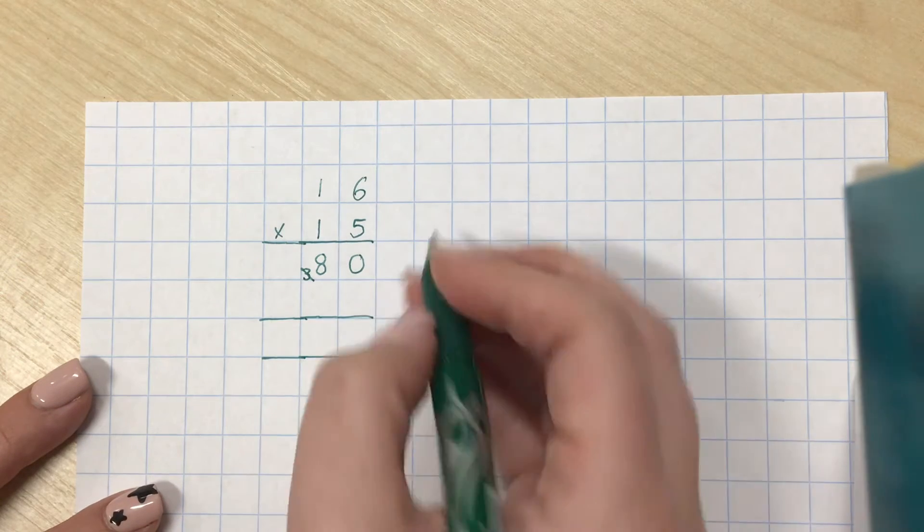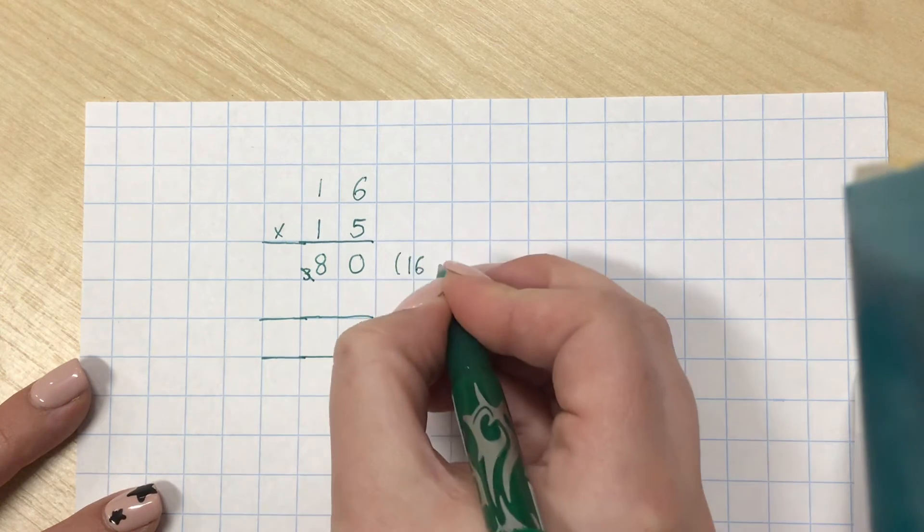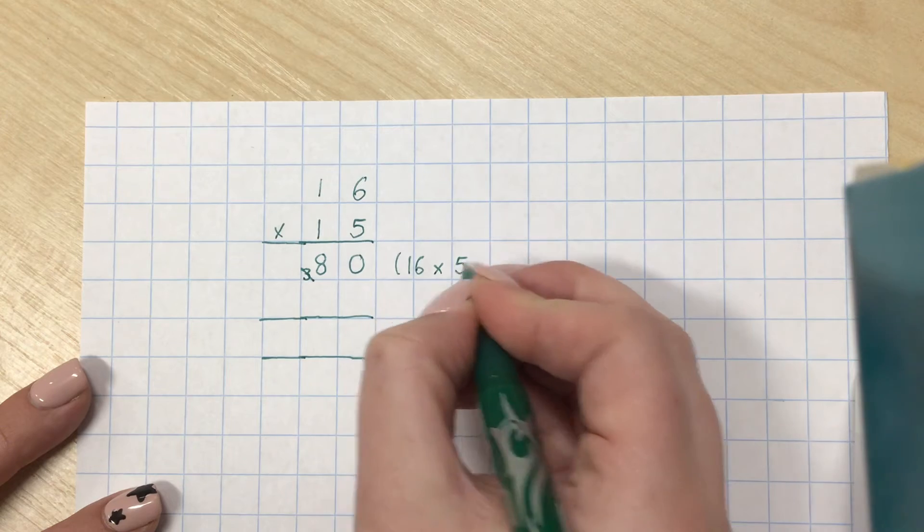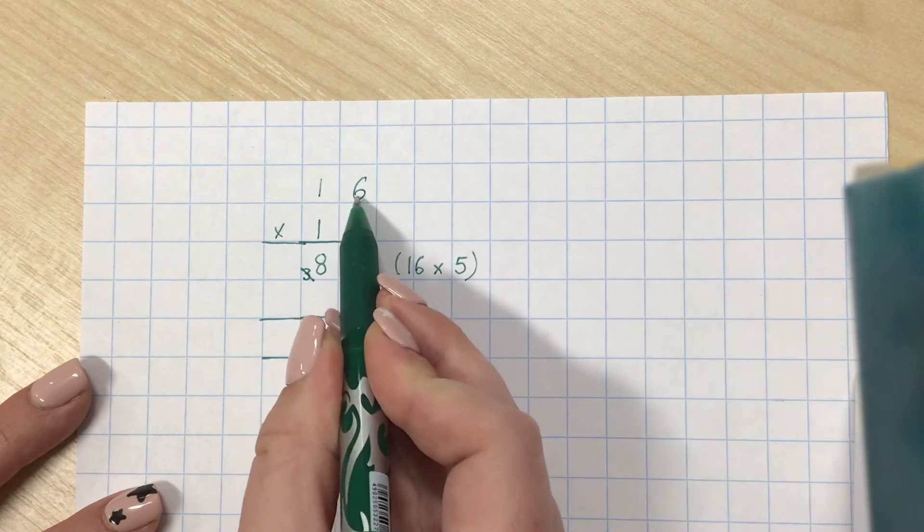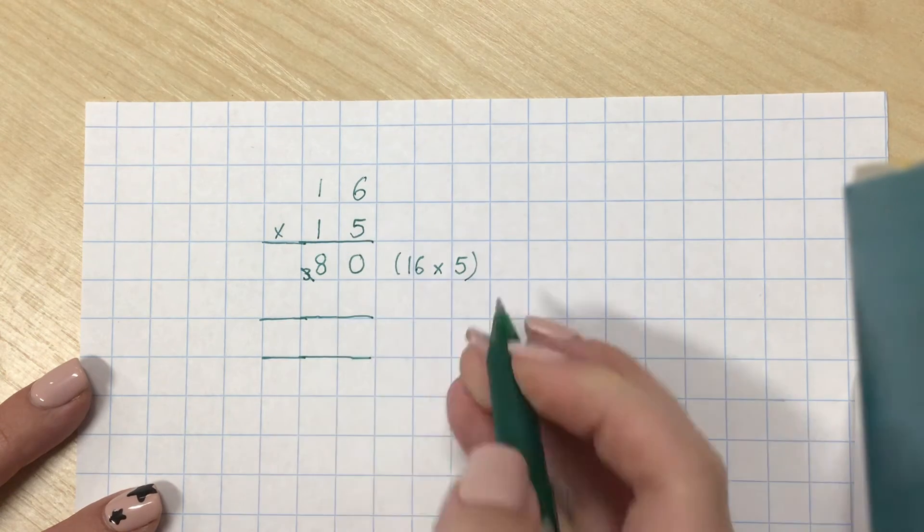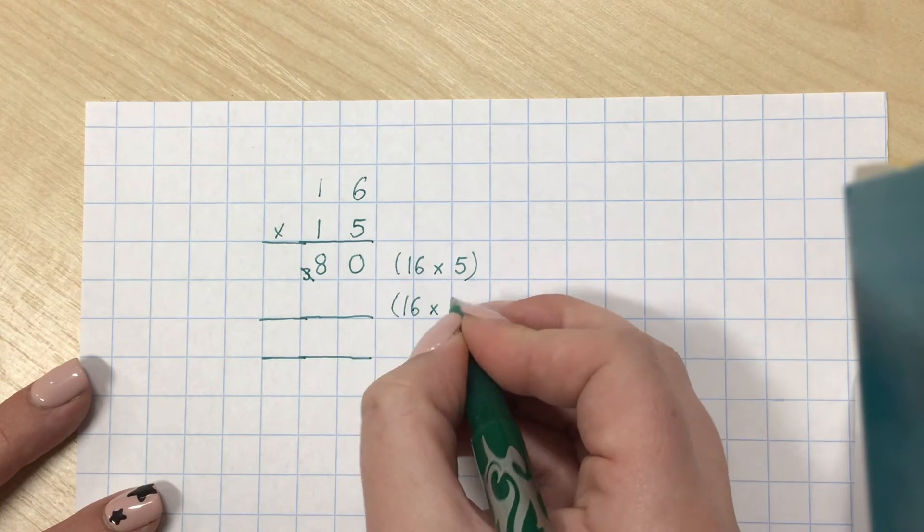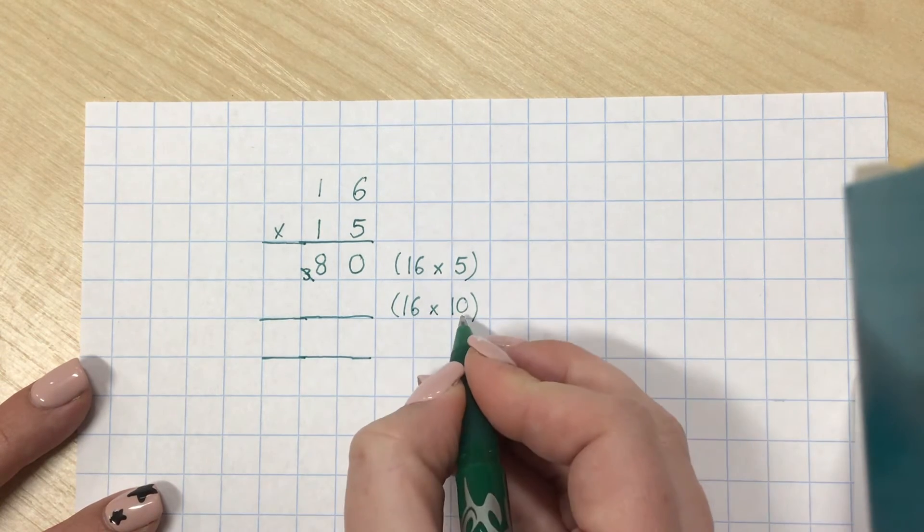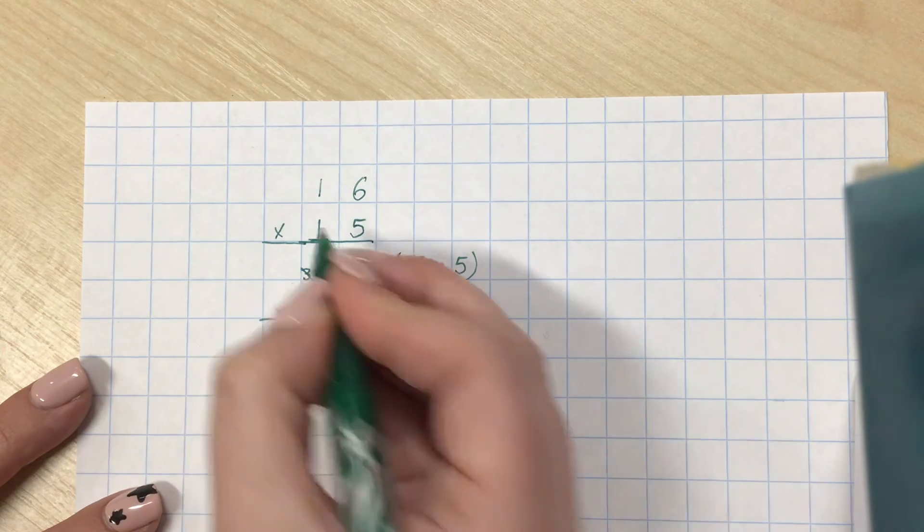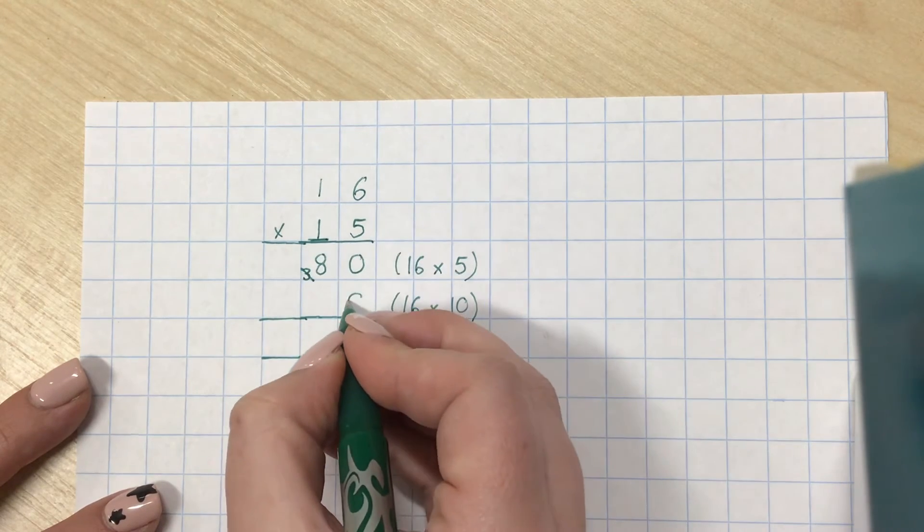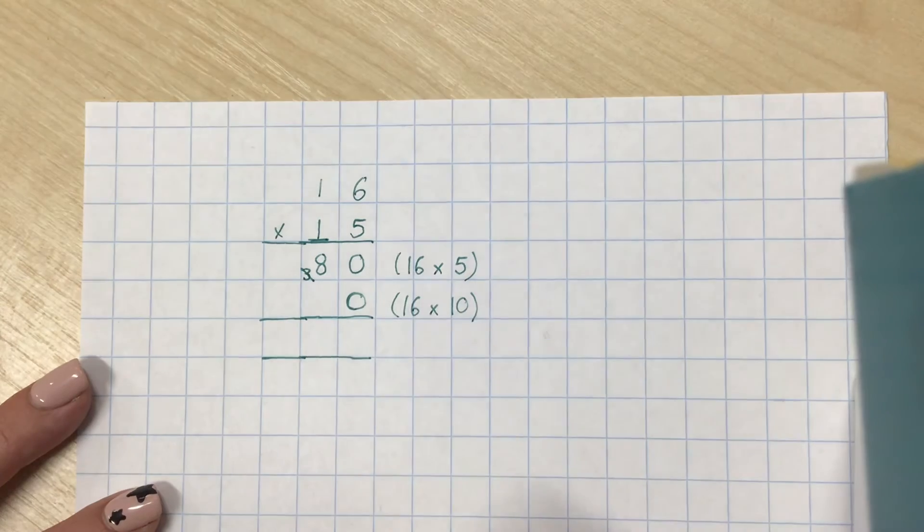Then, I'm moving on. Remember we've done 16 times 5 because we multiplied both those digits by the 5. Now, we're moving on to doing 16 times 10. And because it's a 10 and it's sitting in our tens column, I put my 0 place value holder like that.